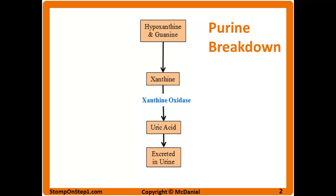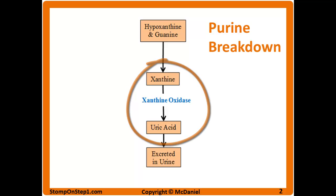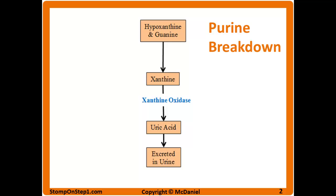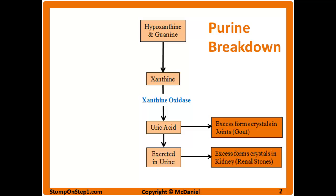Sometimes you have more nucleic acids than you need, so hypoxanthine and guanine are not always recycled — they can also just be degraded if you've got too much. This process involves converting hypoxanthine and guanine into xanthine, and then xanthine is acted on by xanthine oxidase to give you uric acid, which can then be excreted in the urine. However, if there's an excess amount of purines being degraded, the uric acid will build up in the body quickly because the kidney can only excrete so much. When uric acid builds up in the blood, it's going to start forming crystals in the joints — most notably in gout — and also forming crystals in the urine to create kidney stones.